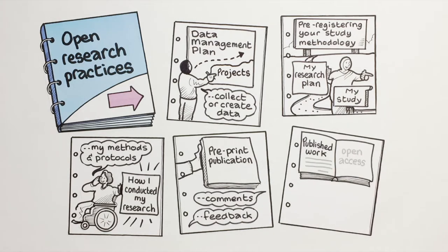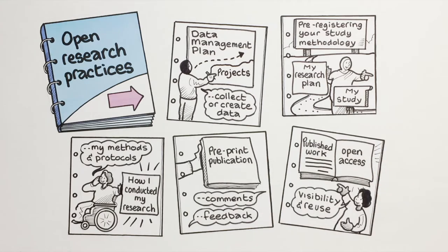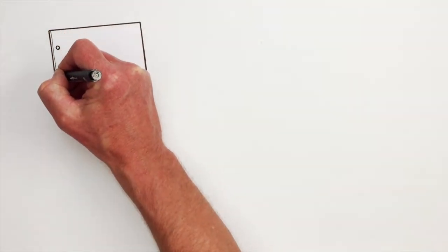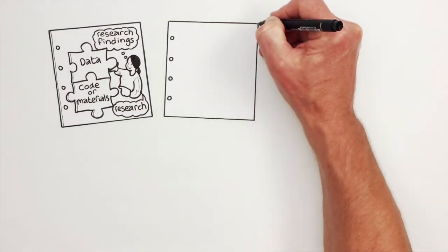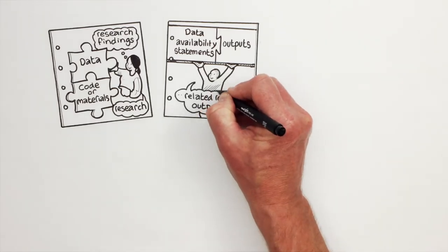Making published work open access, increasing the visibility and reuse of your results. Sharing the data on which you base your research findings, and the code or materials that you've used in your research. Including data availability statements in outputs, ensuring a permanent link between your related research outputs.